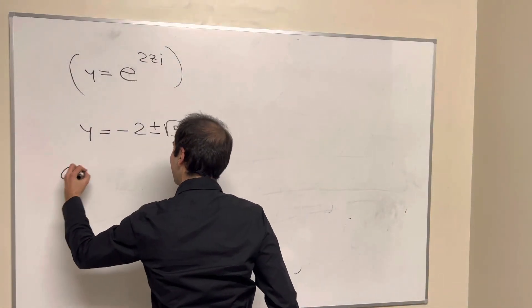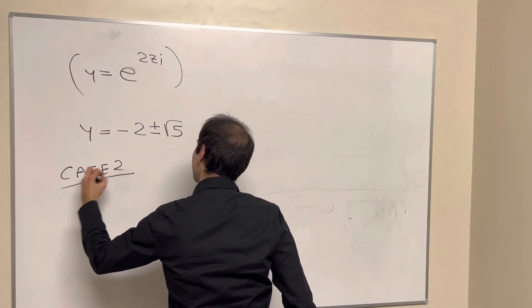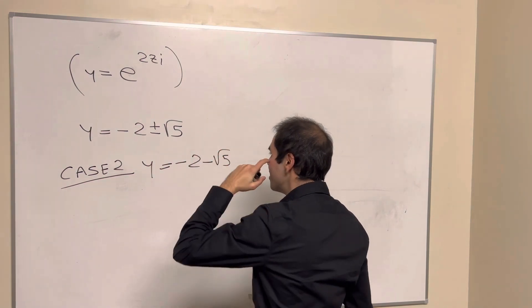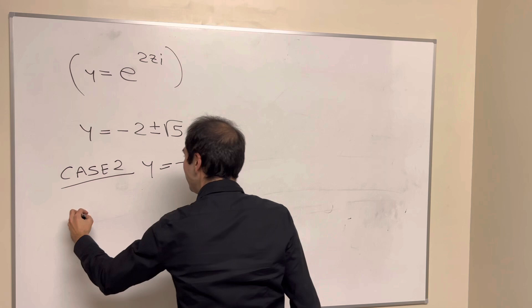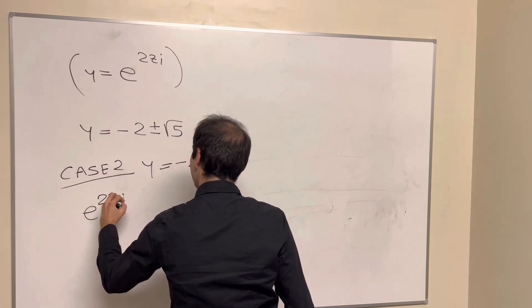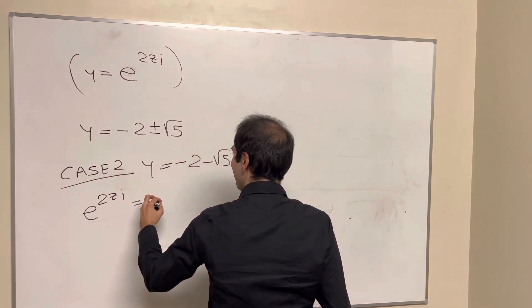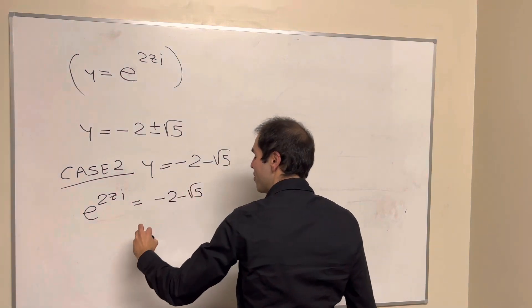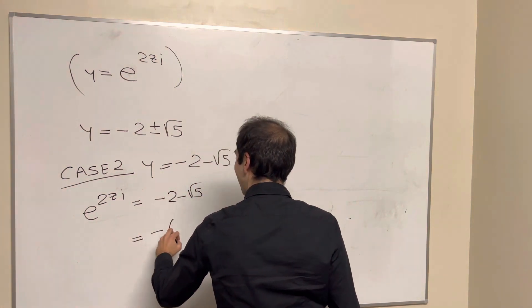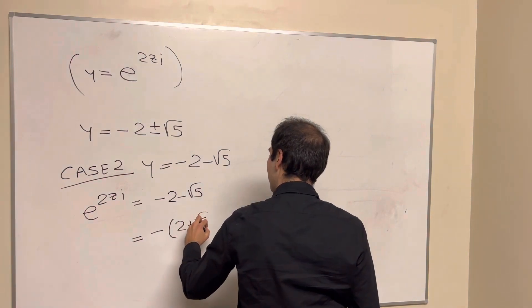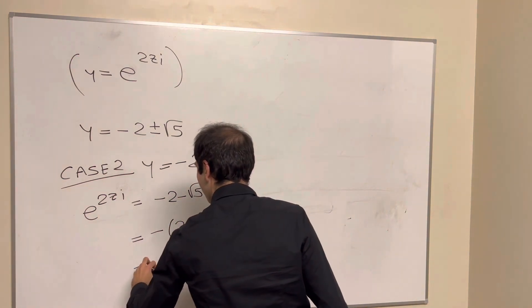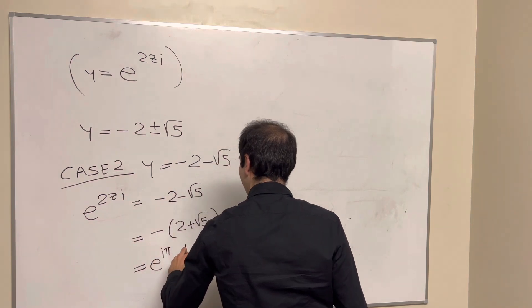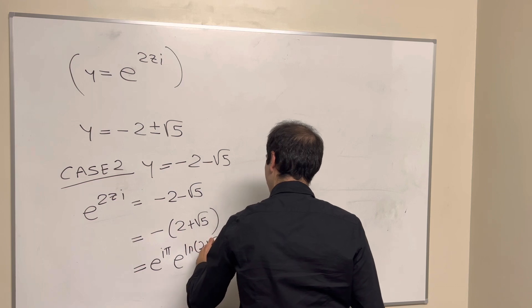And then for the second case, if y is minus 2 minus square root of 5, then again, we get e to the 2zi equals minus 2 minus square root of 5. But in this case, this is minus 2 plus square root of 5, which becomes e to the i pi, and then e to the ln of 2 plus square root of 5.